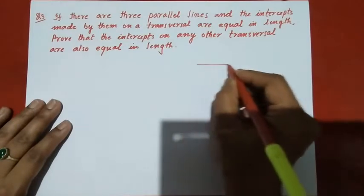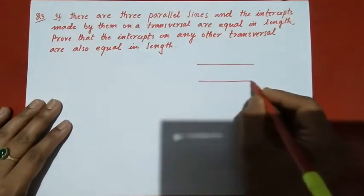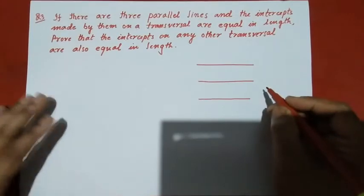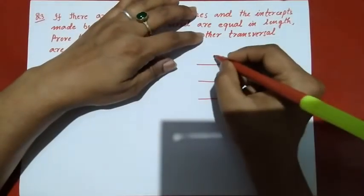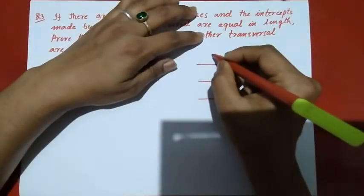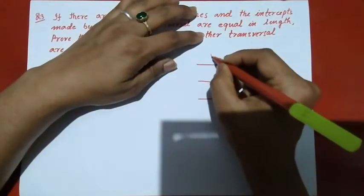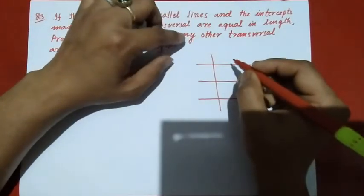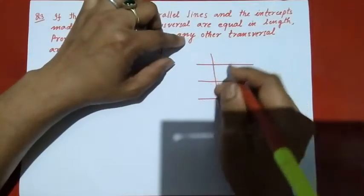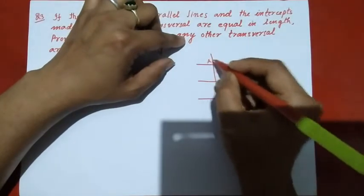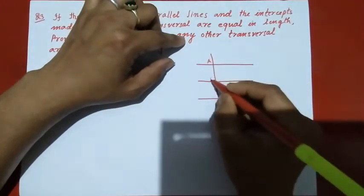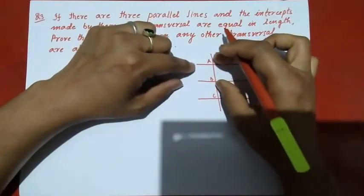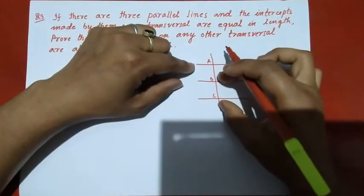Let the three parallel lines be cut by a transversal. The points of intersection on the transversal will be A, B, and C, where AB and BC are the intercepts.